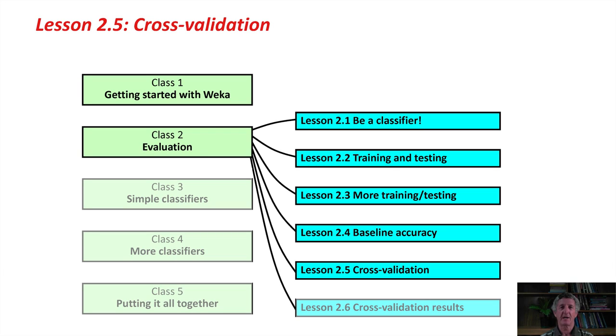A couple of lessons back, we looked at evaluating on an independent test set, and we also talked about evaluating on the training set. We also talked about evaluating using the holdout method by taking one data set and holding out a little bit for testing and using the rest for training. There's a fourth option on Weka's Classified Panel, which is called cross-validation, and that's what we're going to talk about here.